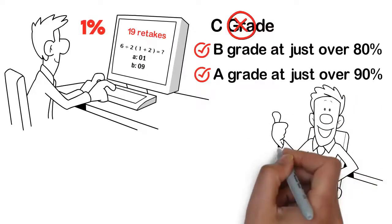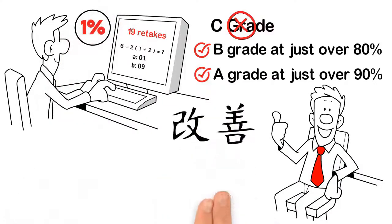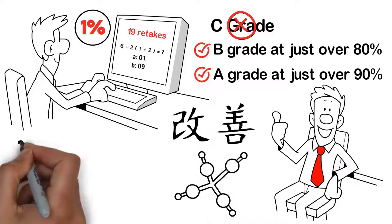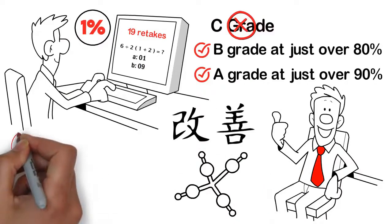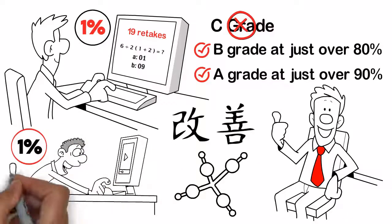So, there you have it, the power of Kaizen and compound interest. You start with 1% improvements. Rinse and repeat, and watch your life transform for the better.